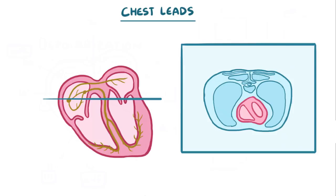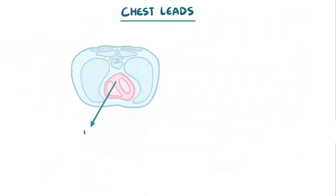Now, let's switch gears and talk about the chest leads, which essentially view the heart in a different plane. Now, looking down at the heart, we have leads V1, V2, V3, V4, V5, and V6.